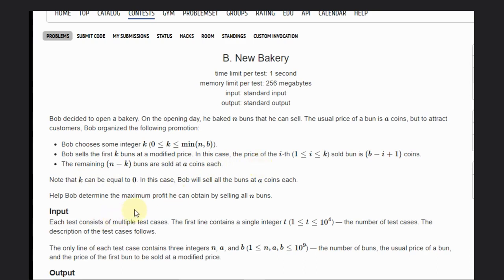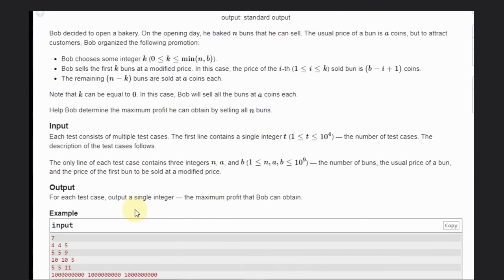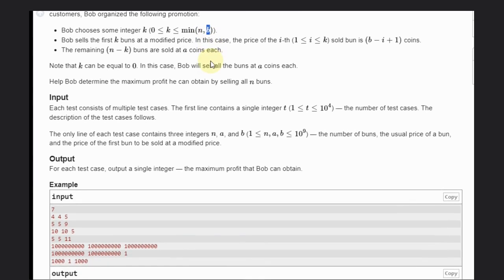We need to determine the maximum profit Bob can achieve. The key thing is that n and b can be anything.